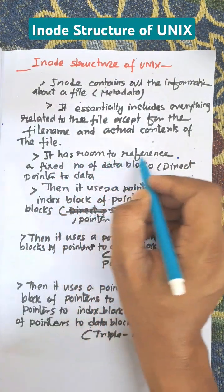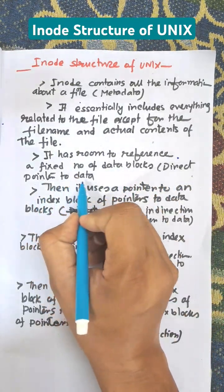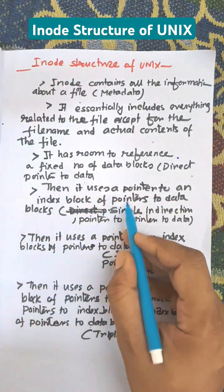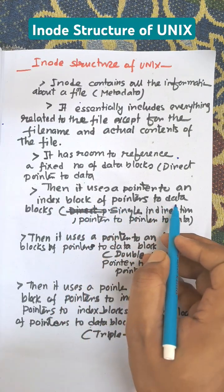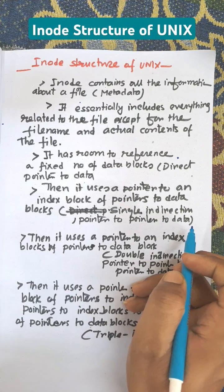It has room to reference a fixed number of data blocks direct point to data. Then it uses a pointer to an index block of pointers to data blocks. That is single indirection, pointer to pointer to data.